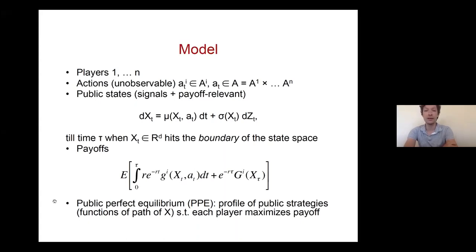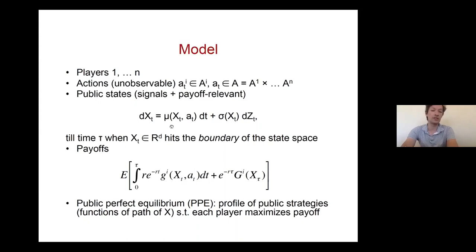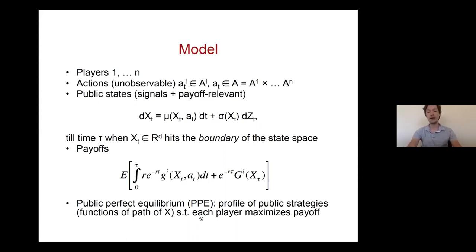In this class of games, we can think about Markov equilibria — equilibria in which actions of the players depend only on the state X. When there are many anonymous players it is natural to consider Markov equilibria, but with a small number of players it is natural to think they try to sustain better cooperation by conditioning play on past histories. We study public perfect equilibria: profiles of public strategies where actions are functions of past histories, and all players must maximize their payoffs.